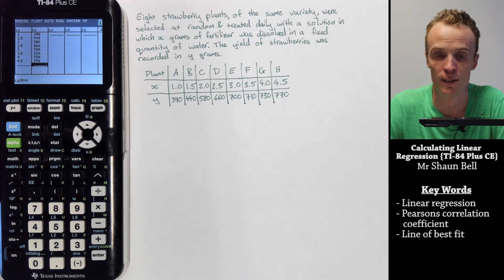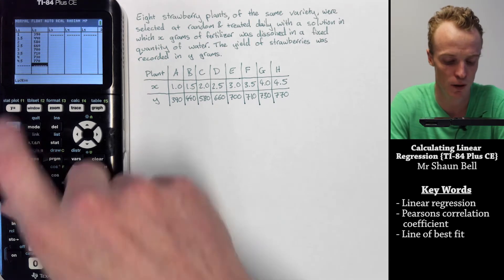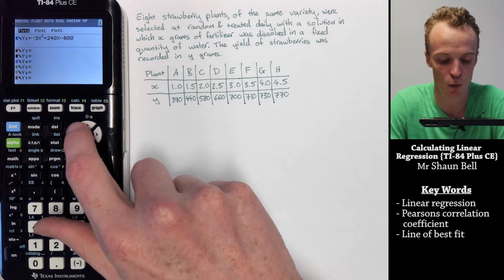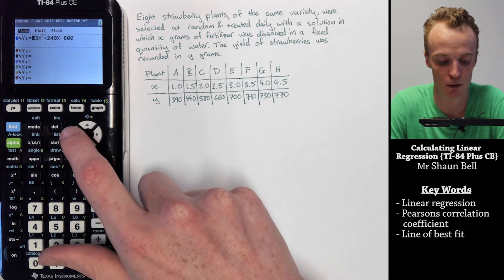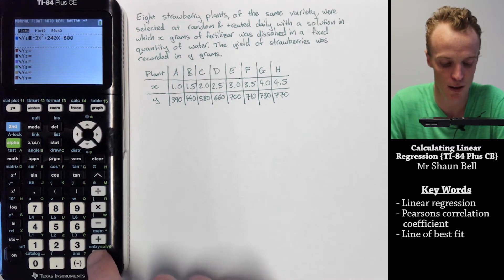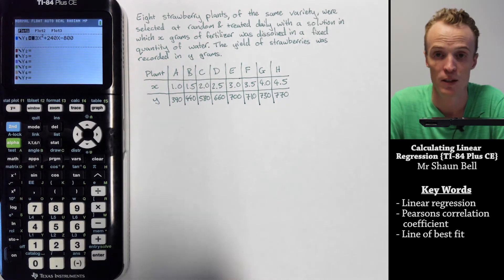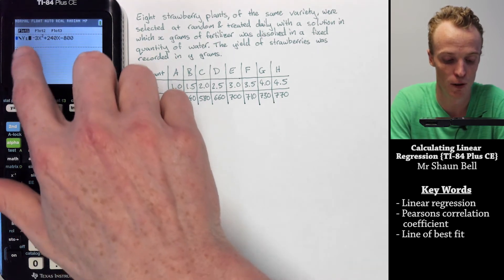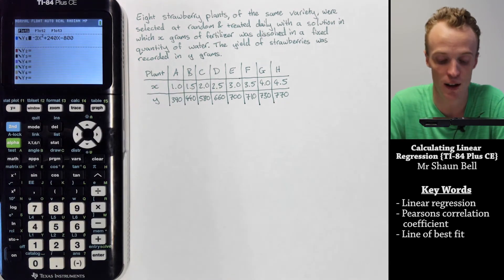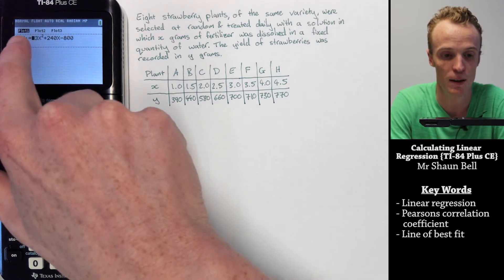Now I've created both my x coordinates and my y coordinates as two separate lists. Now I want to graph these lists. If you've used graphing before, you might have an equation currently being graphed. You'll see that if this equal sign is black. To turn off graphing that equation, move your cursor so it's flashing on that equal sign, press enter, and it will no longer be black.